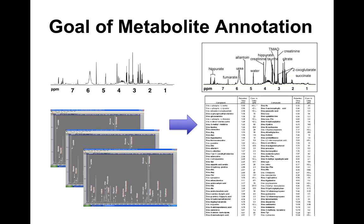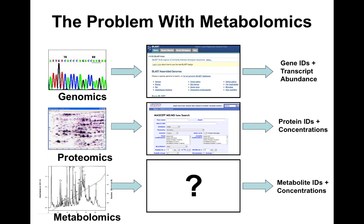This is an example of an NMR spectrum that has been annotated, resulting in a list of compounds. When metabolomics began about 20 years ago, it was lagging behind other fields. Genomics had already been well-developed with resources like GenBank, and proteomics was evolving with tools like Mascot and BLAST.